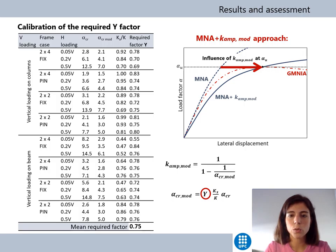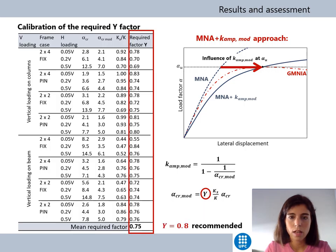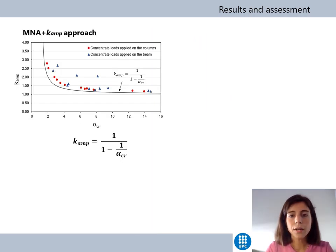Finally, we evaluate the calibration of the modified k-amp factor. For this purpose, the required values of the y-factor in the modified alpha-crit expression were determined for the 24 frames analyzed. Several first-order plastic analyses (MNA analyses) with sway forces amplified by modified k-amp factors were executed in an iterative process, until the drifts at the ultimate load obtained from the MNA analysis were equal to the drifts obtained from the GMNIA analysis. As shown, the mean value for this factor is 0.75, so the value of 0.8 proposed by the team of Imperial College is accurate and safe.